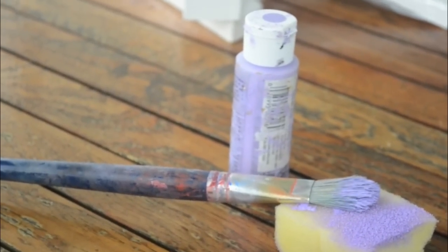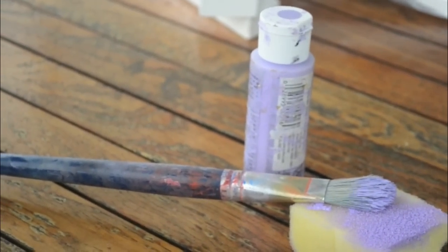The only things you'll need are paint of your choice, a sponge, a paintbrush, and of course the wooden letters. I just got mine from the craft store.